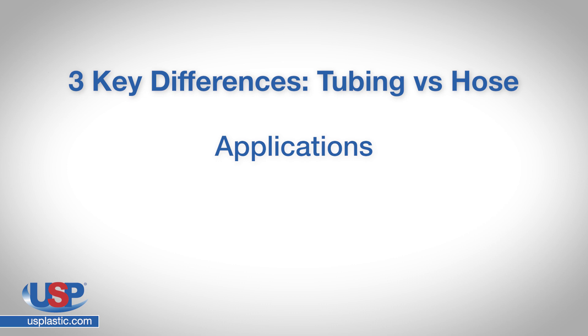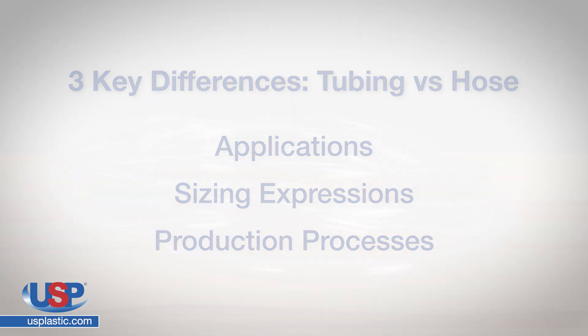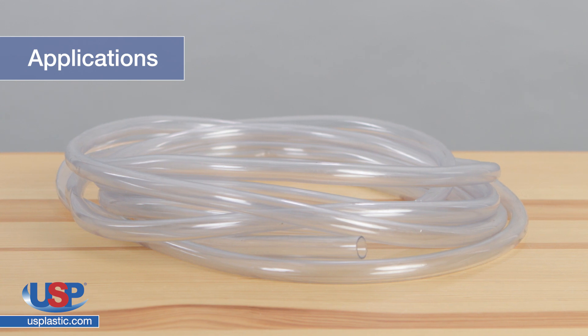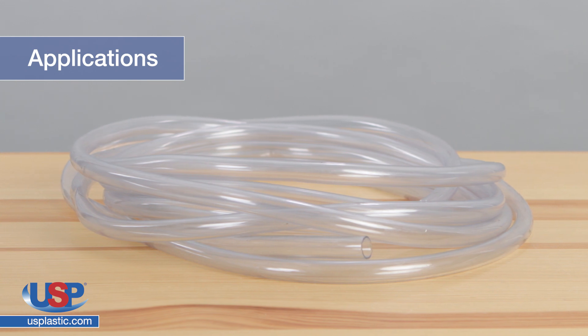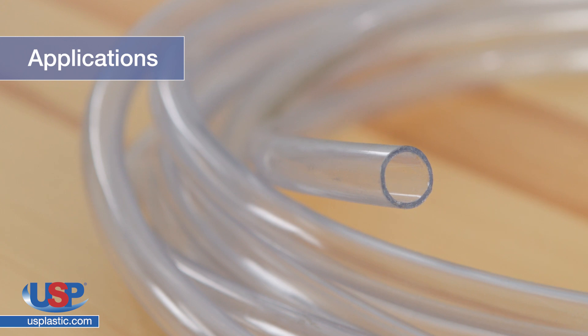Those three categories are: applications, sizing expressions, and production processes. Tubing is mainly used for structural applications. Depending on the application, most tubing has to meet guidelines set by many different standard organizations, including the International Organization for Standardization and ASTM International globally.